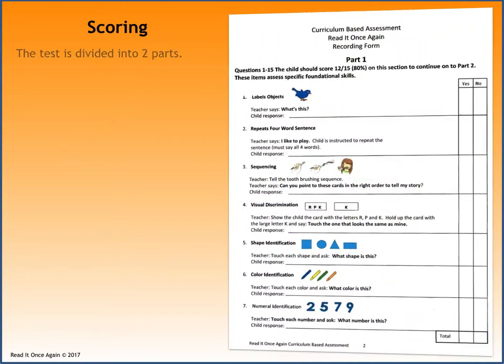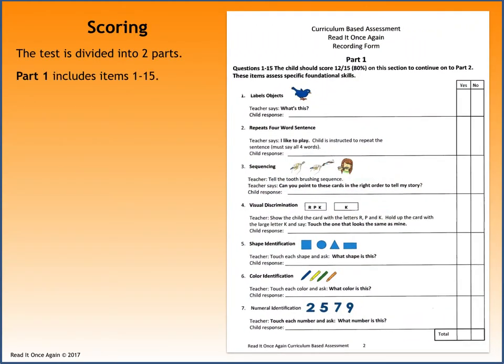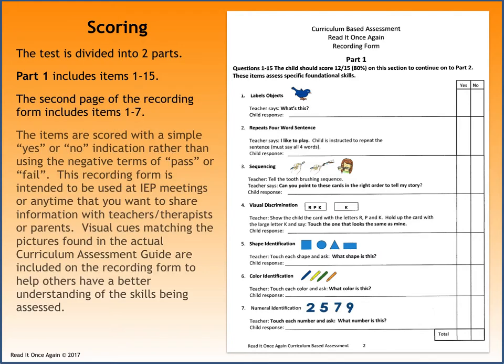The test is divided into two parts. Part 1 includes items 1 through 15. The second page of the recording form includes items 1 through 7. The items are scored with a simple yes or no indication, rather than using the negative terms of pass or fail. This recording form is intended to be used at an IEP meeting or any time you want to share information with teachers, therapists, or parents. Visual cues matching the pictures found in the actual curriculum assessment guide are included on the recording form to help others have a better understanding of the skills being assessed.